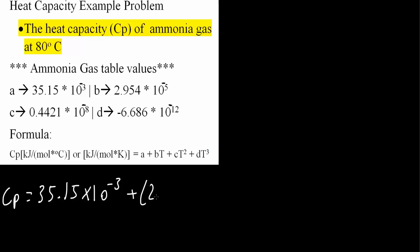B is 2.954 times 10 to the negative 5. And the value of T is 80 degrees Celsius. It's okay to use Celsius because in our formula it uses Celsius. Plus now the C value.